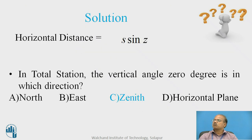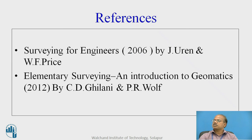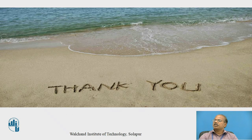The answers to the question are: horizontal distance can be calculated with the formula s·sin(z), and in total station the vertical angle 0 degree is in the zenith direction — zenith is vertically upwards relative to the instrument. I have used these references while preparing this online educational resource. Thank you very much, one and all.